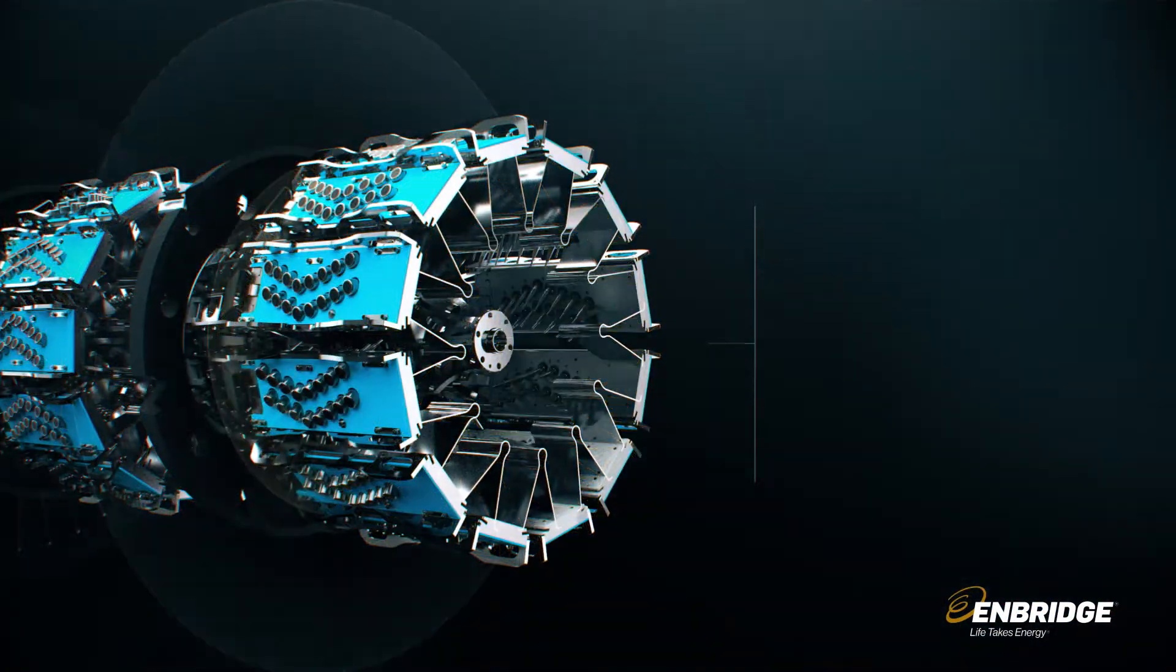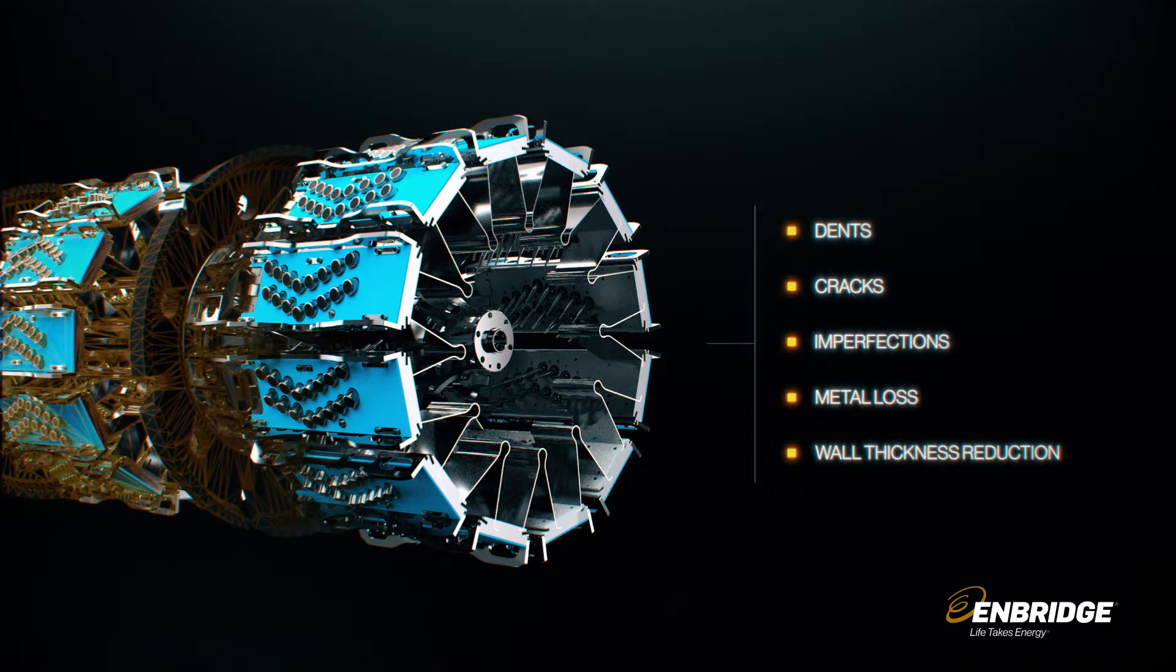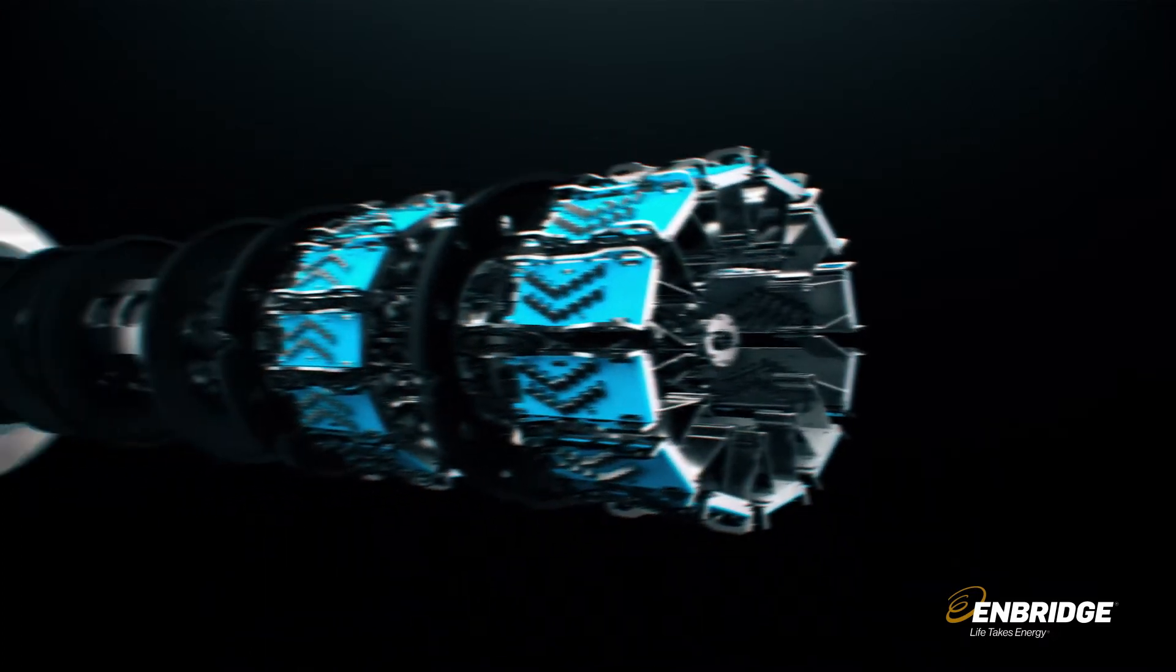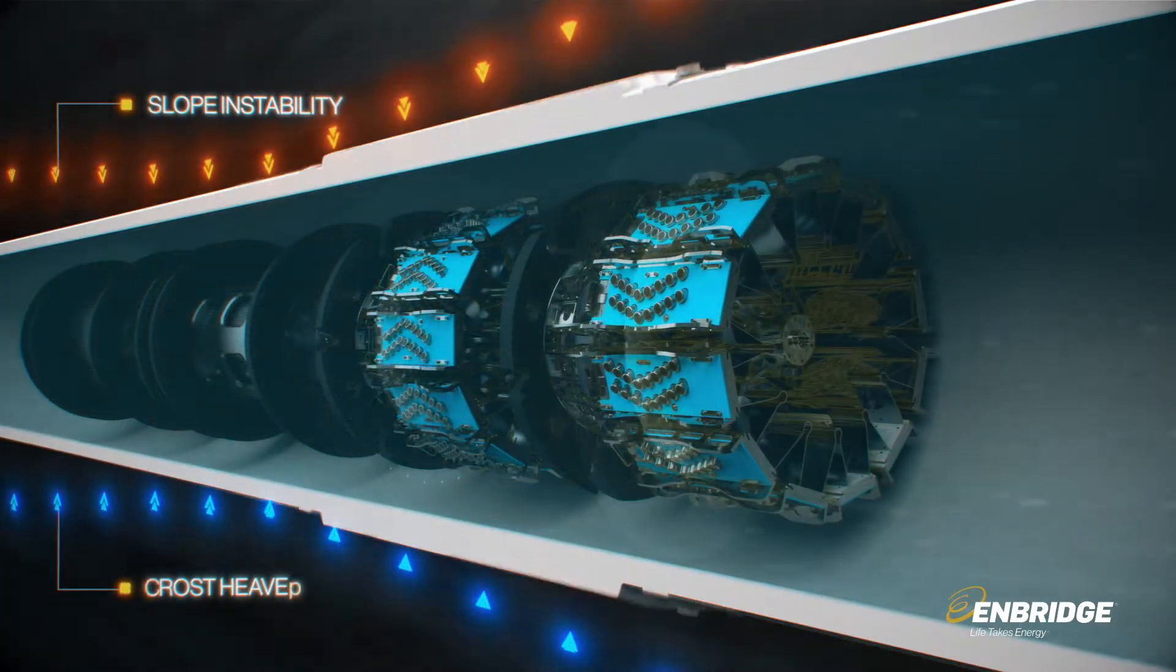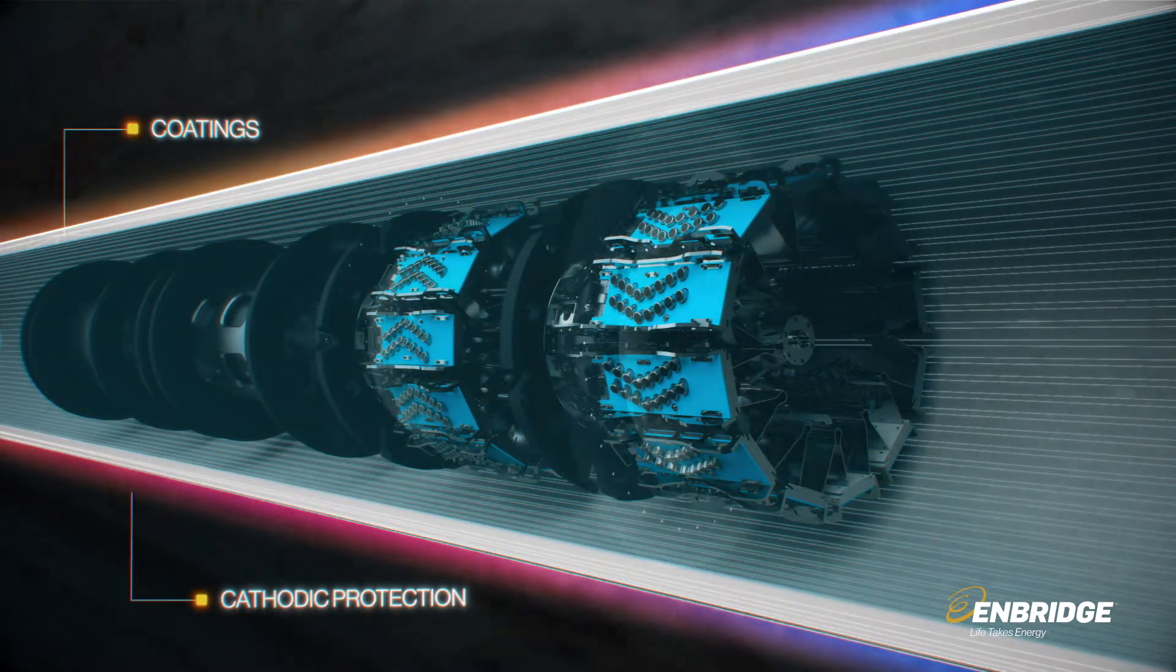ILI tools identify and report even the most minuscule changes or features that may require follow-up maintenance. They can also detect strain on a pipeline caused over time and help ensure the effectiveness of a pipeline's protection systems.